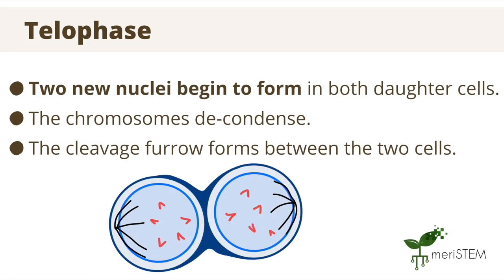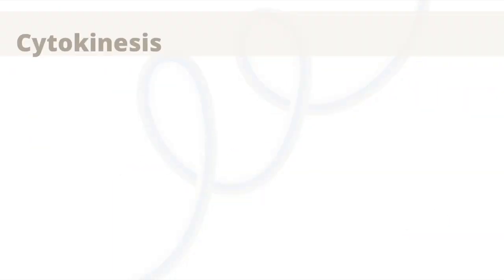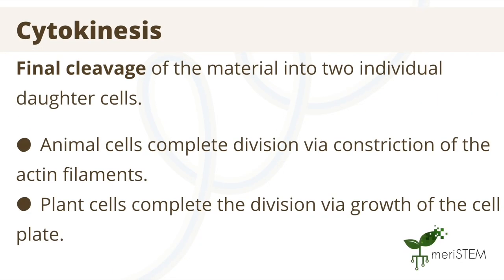In the telophase, two new nuclei start to form, one for each of the daughter cells that will remain after mitosis. Chromosomes then decondense, and the cleavage furrow begins to form, similar to in binary fission. Cytokinesis is simply the moment where the pinching of the cell finally results in the two daughter cells — it is the final cleavage of the material that results in the two cells.